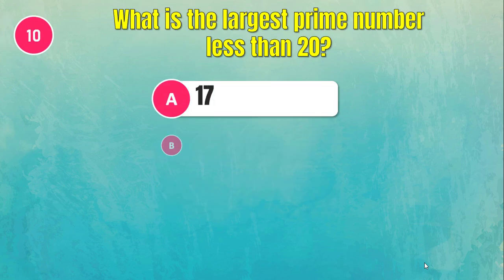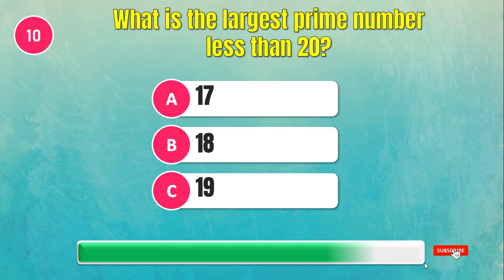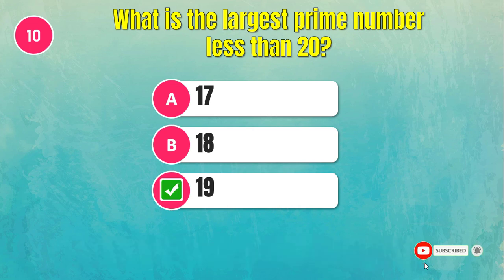What is the largest prime number less than 20? The answer is 19.